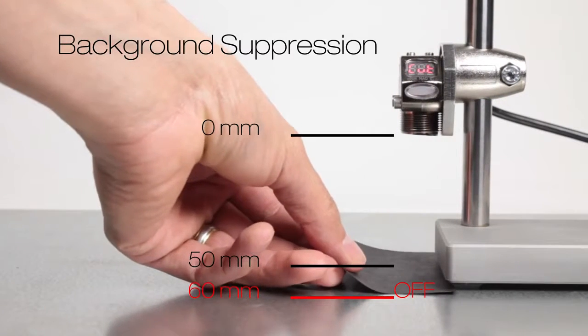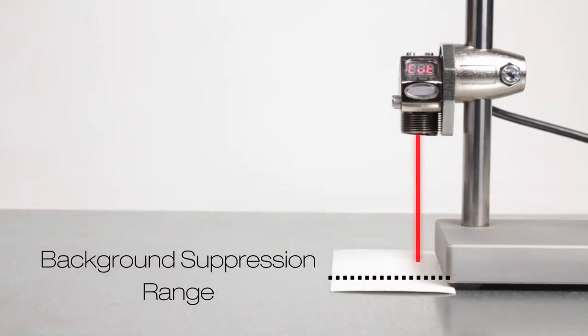The Q3X has background suppression capability so it ignores targets of all colors and reflectivities outside its 60mm background suppression distance.